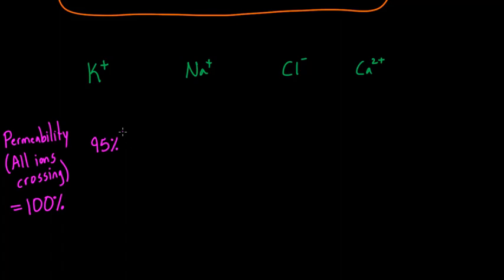Let's say that it's 1% from sodium and 2% from chloride and 2% from calcium. So really, in terms of dominating the permeability, in this case, I've set it up so that potassium is dominating the permeability. Actually, in most cells, that's about right. Potassium is the dominant ion in most cells. In fact, sometimes even more than 95%.